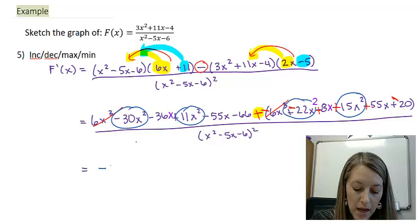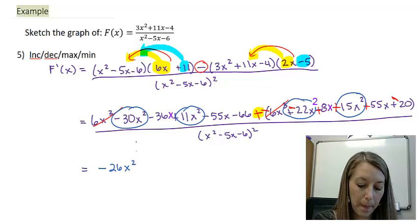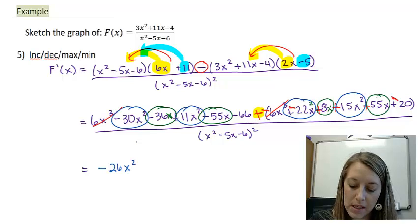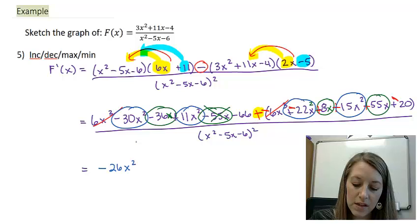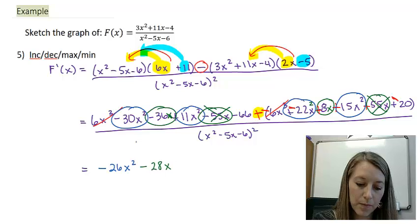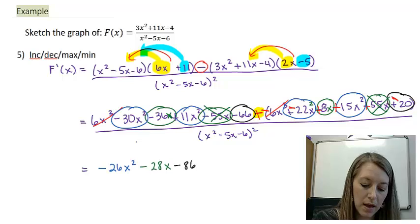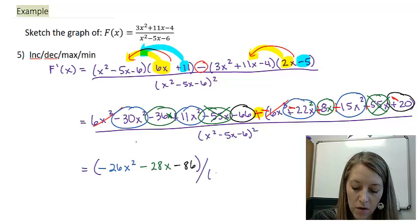Now let me combine all of my x's. Negative 36x minus 55x plus 8x plus 55x. Well, my 55x's cancel out, so I just need to do negative 36 plus 8, and that gives me negative 28x. And last, my constant term: minus 66 minus 20 gives me negative 86. And that is still over my denominator squared.